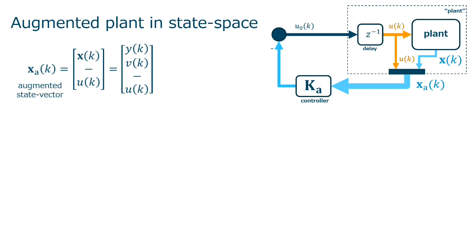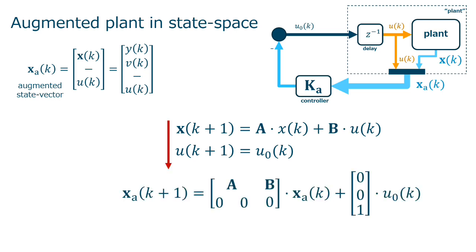The first thing to understand is that we now have an augmented state, where the output of the delay, the actual control action, is the additional state variable. So we define an augmented state, xA, and these two equations is what we know from the augmented plant: the original state-space and the delay equation. By putting them together in an augmented state-space, we will get the augmented state-space model.